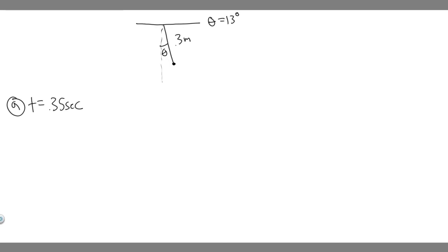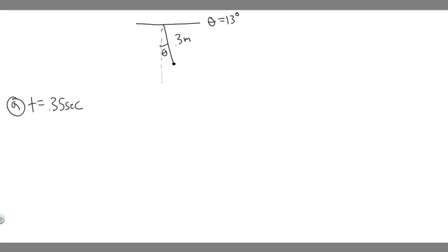So we have this pendulum. We know it's going to be at an angle of 13 degrees and its length is 0.3 meters long. What we're trying to do is find the angular position — solving for theta — at these different times: 0.35 seconds, 3.45, and 6 seconds. Let's start with part a at 0.35 seconds.